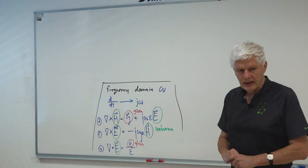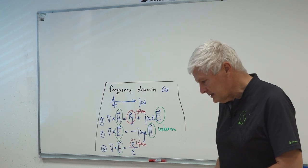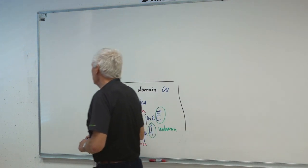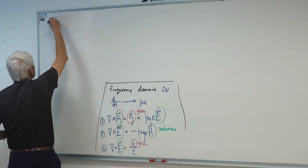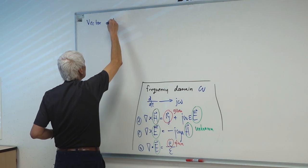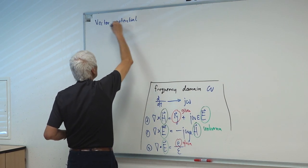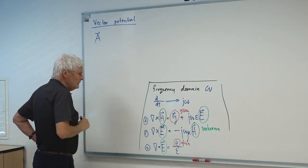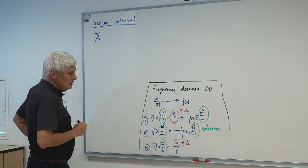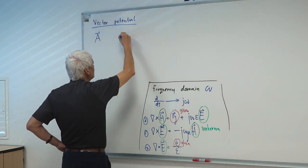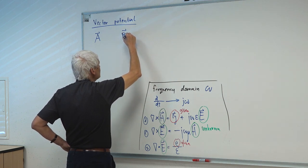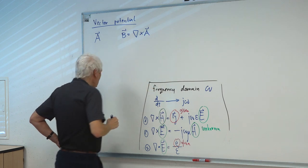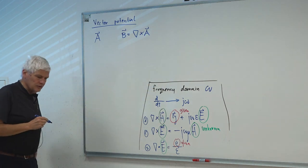A direct solution of the Maxwell equations is not practical. It does exist, but it's very difficult to solve. So what we are going to do is define a new quantity called the vector potential. The vector potential — we will use the letter A with the vector sign — is defined through the magnetic field. The magnetic field, magnetic flux density, is equal to curl of vector potential. Only the curl is defined; the divergence of the vector potential is not defined.